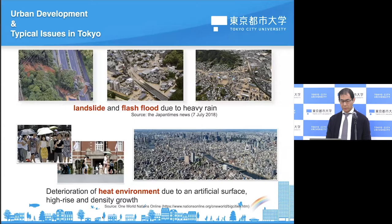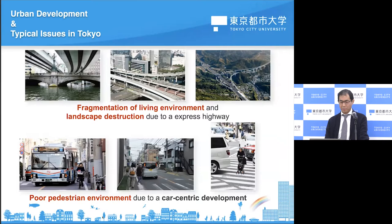There is also deterioration of the heat environment due to artificial surfaces and high-rise, high-density growth — I will explain more about this later. And the fragmentation of living environment and landscape destruction sometimes occurs, as you can see in this image, for example due to express highways. Our daily life is becoming more convenient, but sometimes these kinds of problems happen, including poor pedestrian environments due to car-centric development. These problems can especially be seen in housing areas in Tokyo.